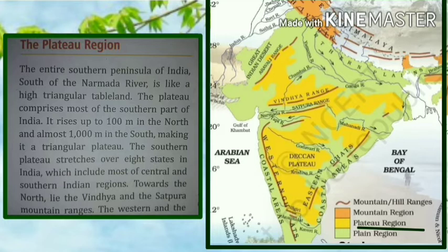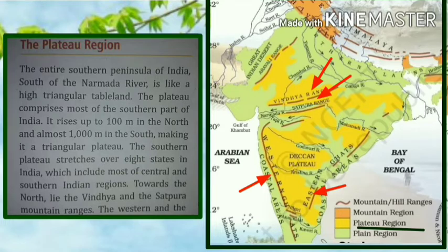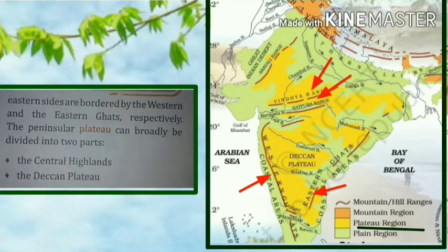The southern plateau stretches over eight states in India, which includes most of the central and southern Indian region. Towards the north lie the Vindhya and the Satpura mountain ranges. The western and eastern sides are bordered by the Western Ghats and the Eastern Ghats respectively.